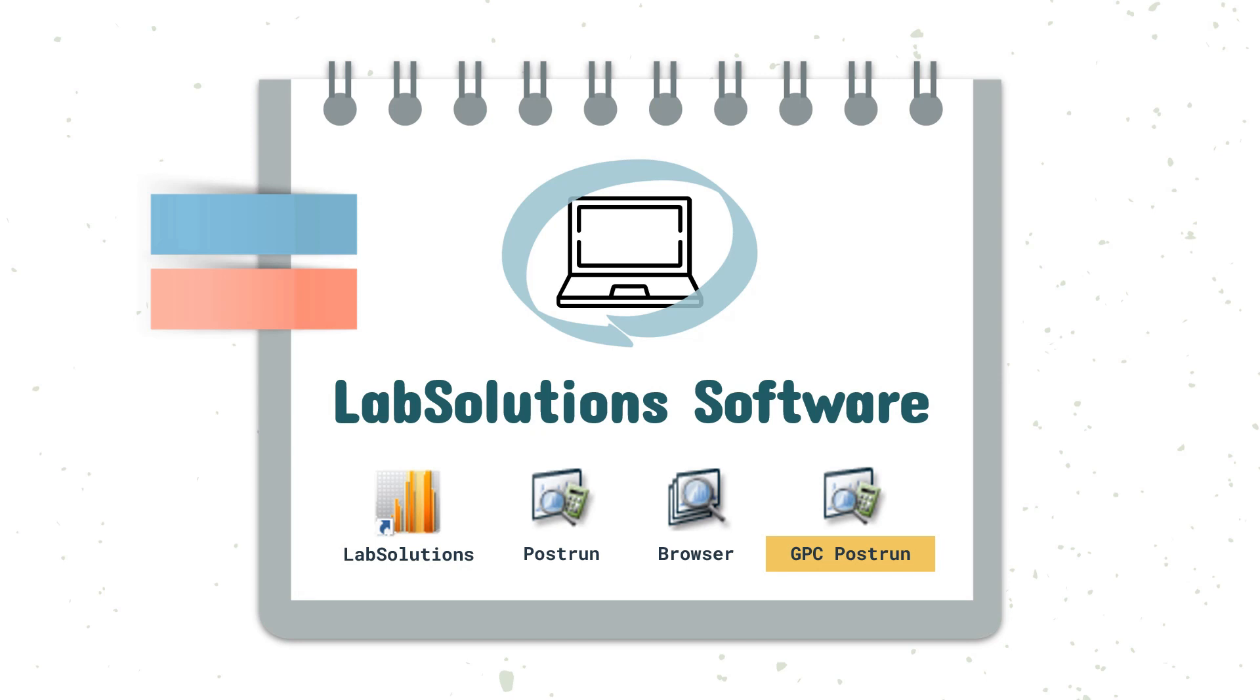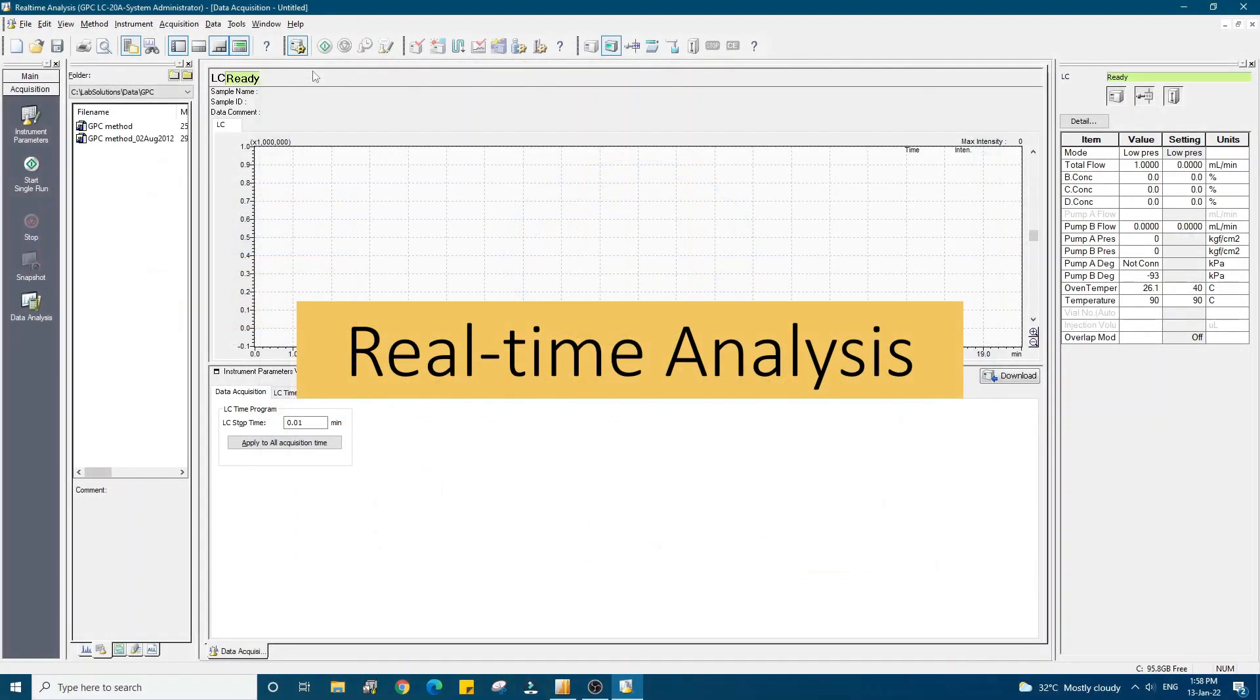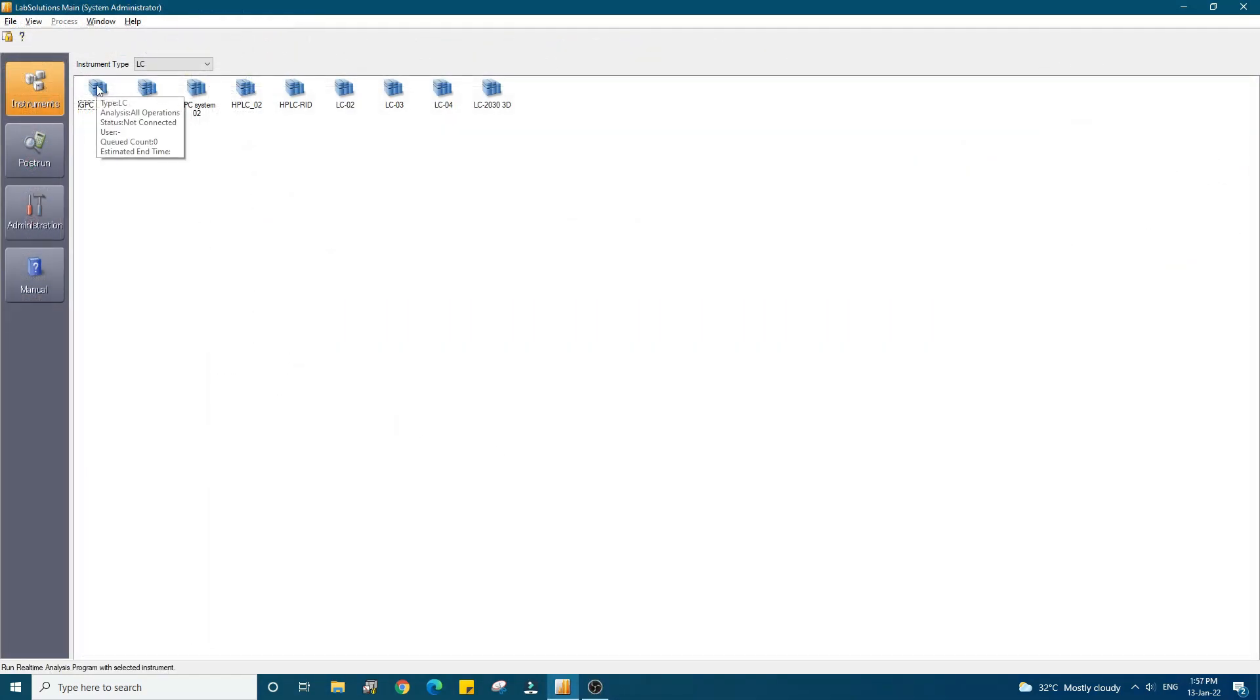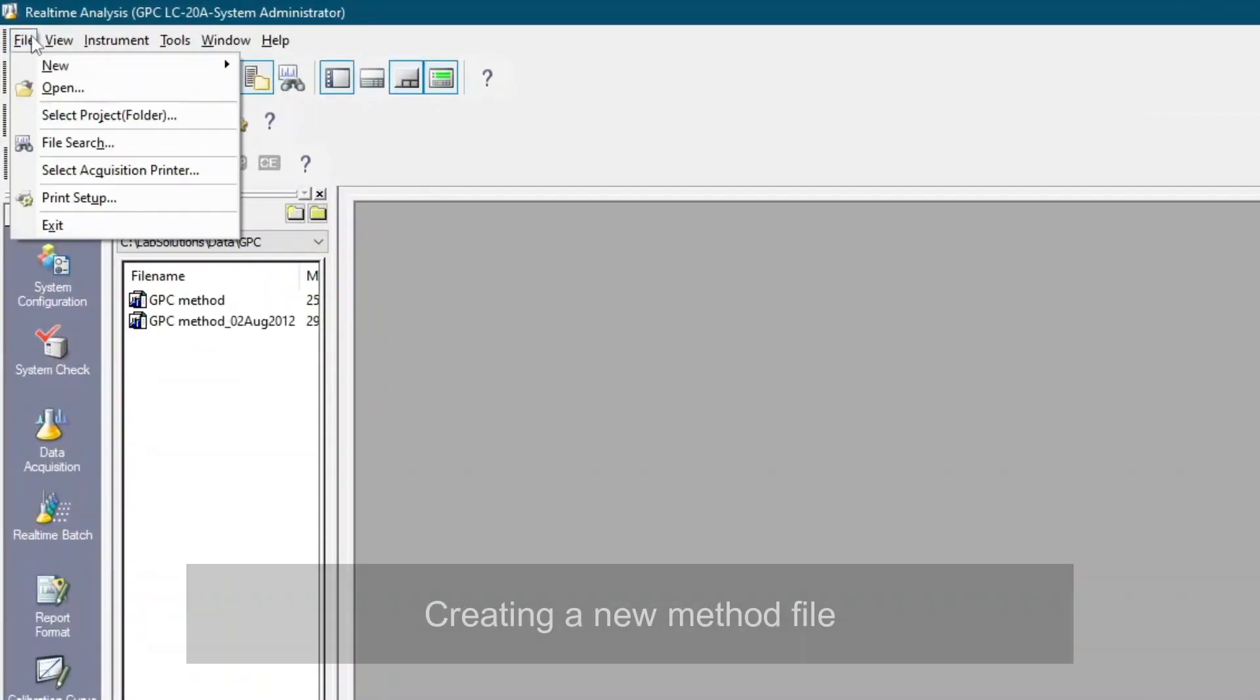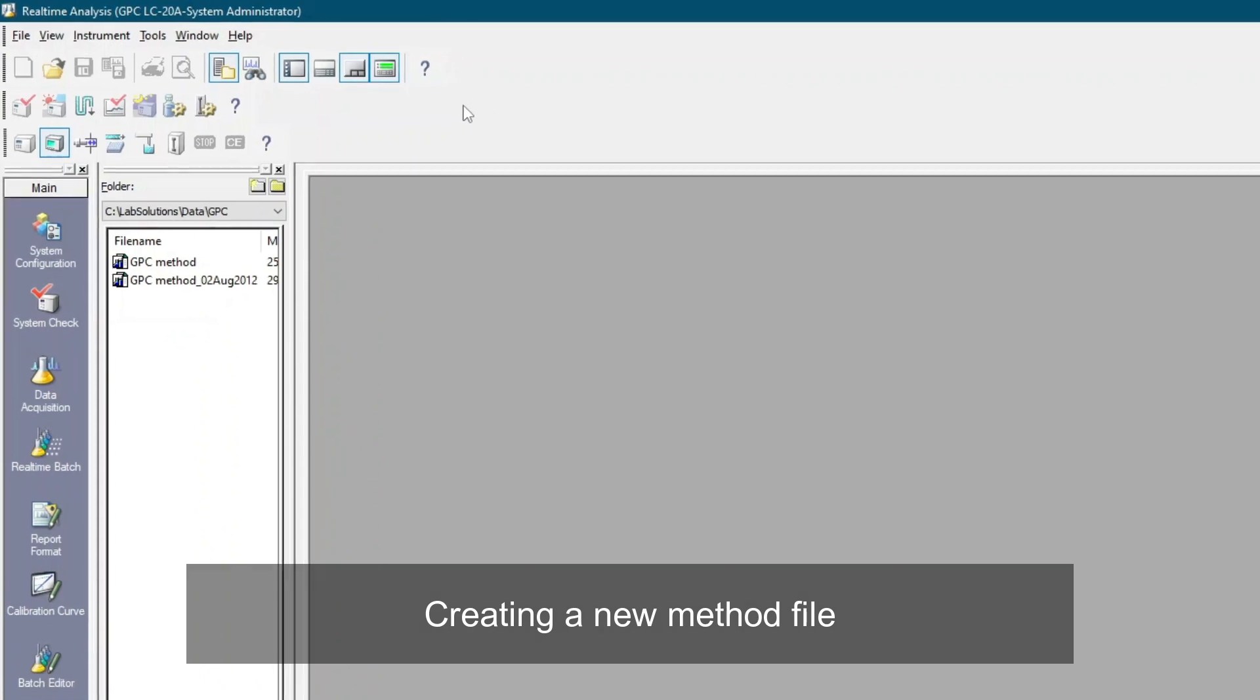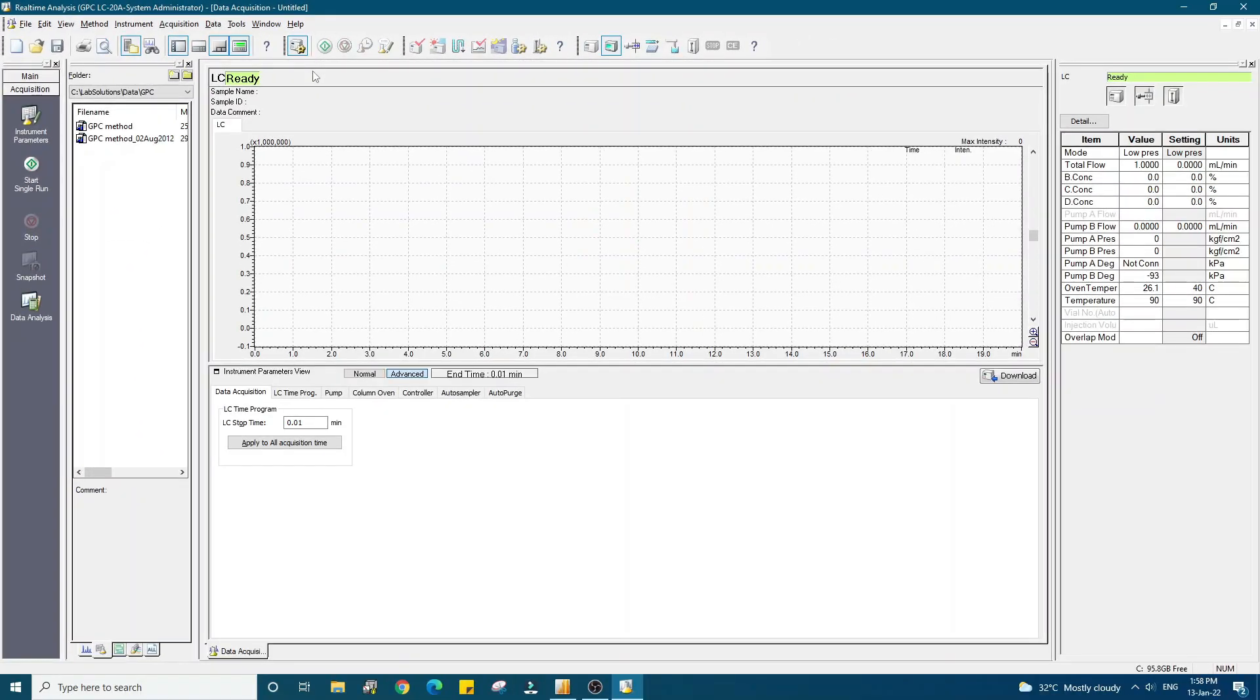The LabSolutions software is used to run the analysis. After the analysis is done, the data obtained is then processed by the GPC post-run tool found inside LabSolutions. Now let's move on to the LabSolutions workstation, starting from how to conduct a real-time analysis. First, we need to open the real-time analysis window and then create a new method file for GPC analysis. This method file will be used to analyze the GPC standards.